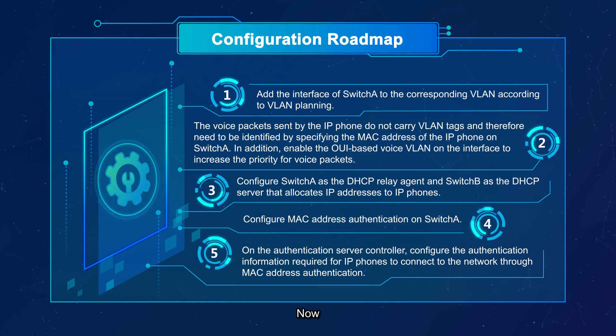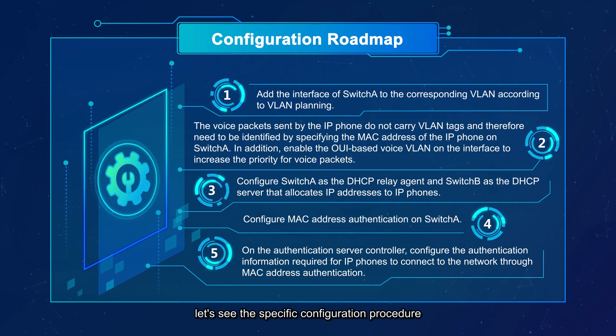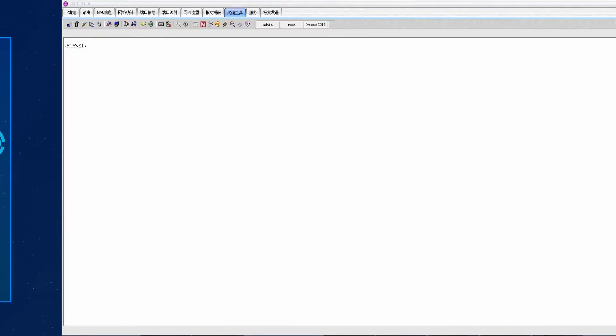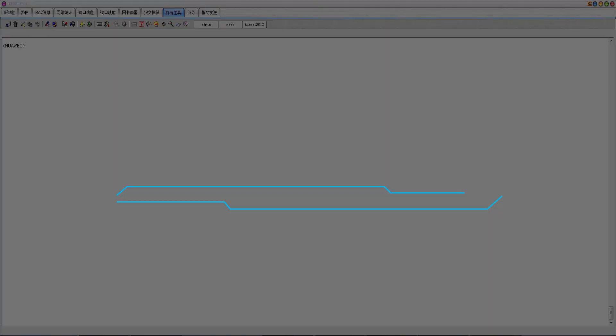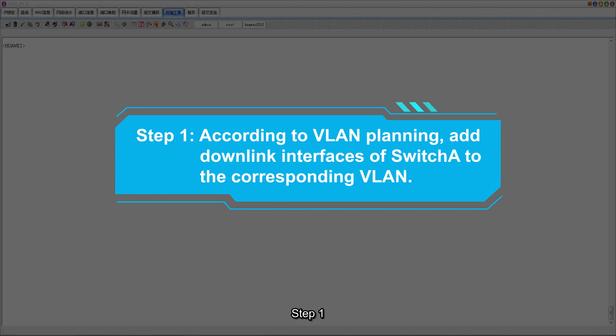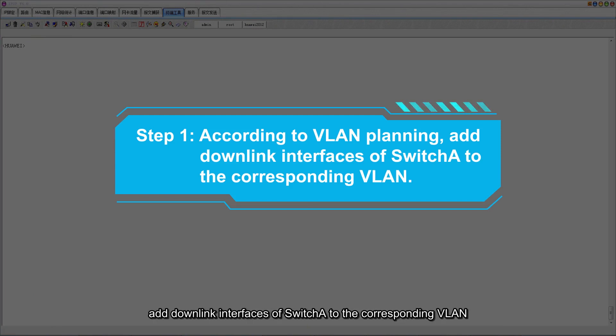Now let's see the specific configuration procedure. Step 1: according to VLAN planning, add downlink interfaces of switch A to the corresponding VLAN.